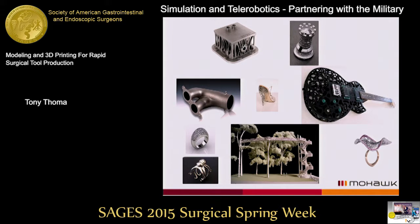Some common parts: up in the top left there's a heat exchanger for a Formula One car, a simple chest piece, an exhaust header for a race engine. Even in the artistic world — stilettos for a shoe which you can't make any other way, a guitar you couldn't make any other way. Jewelry is a big example, and architectural-type parts.